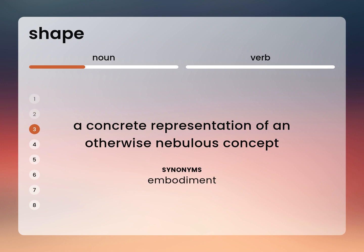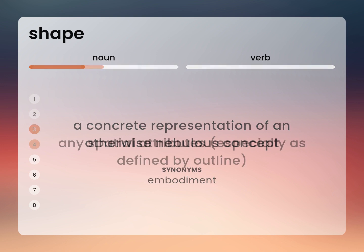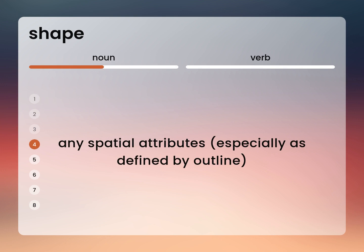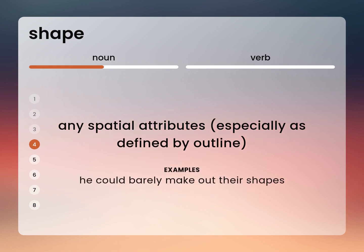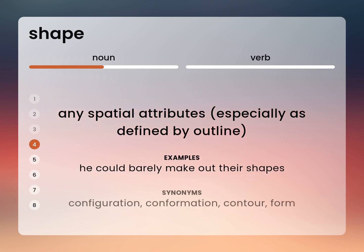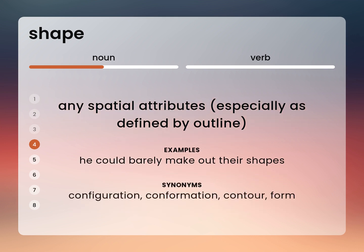Embodiment. Any spatial attributes, especially as defined by outline. He could barely make out their shapes. Configuration, confirmation, contour, form.